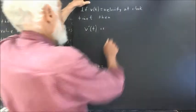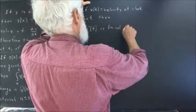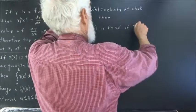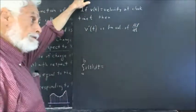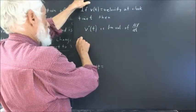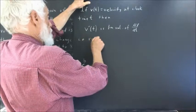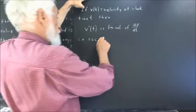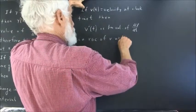It's a limiting value of delta v over delta t. And it is. It's the rate of change of v with respect to t.